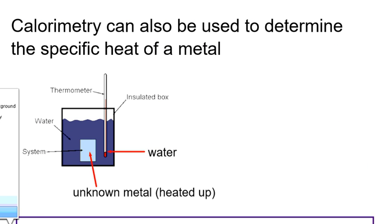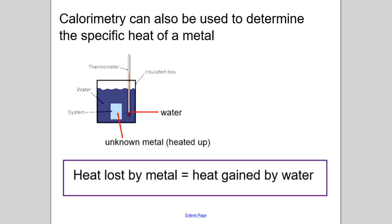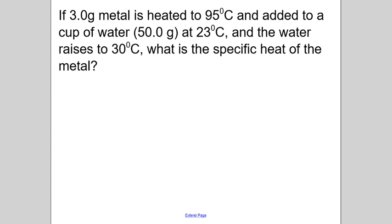Calorimetry can also be used to determine the specific heat capacity of metals. If you have a metal, you heat it to a known temperature, drop it into water, use the heat gained by the water and the final temperature to figure out how much energy was released by the metal, and then solve for its specific heat — which may also help identify the metal. An example: 3 grams of an unknown metal is heated to 95°C and added to a cup of water. You set mc∆t of the metal equal to mc∆t of the water.